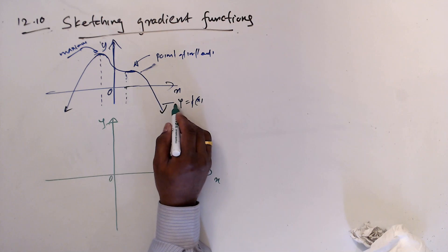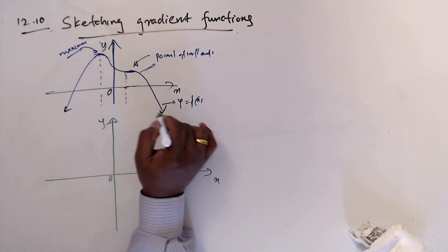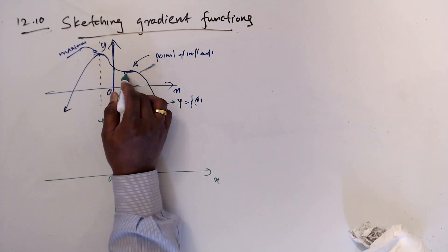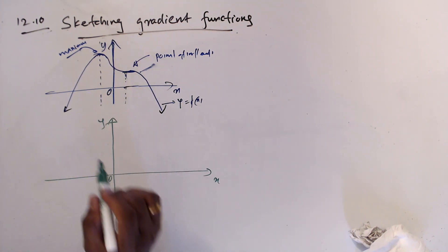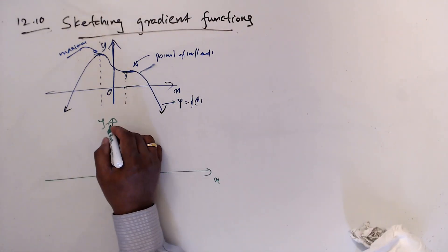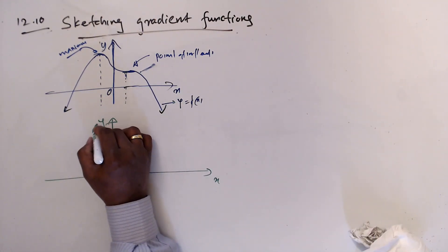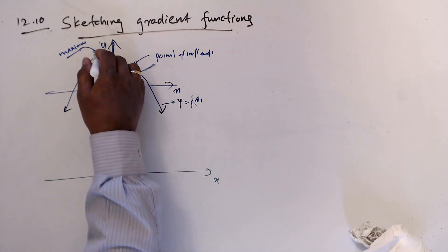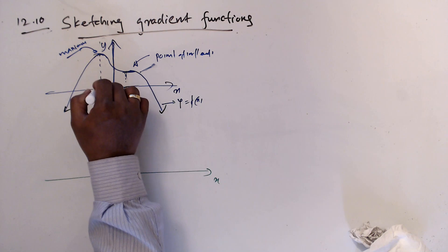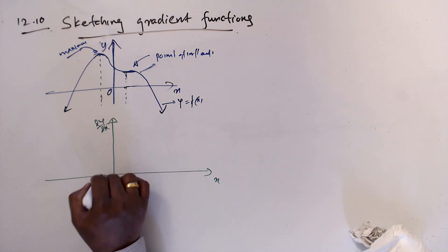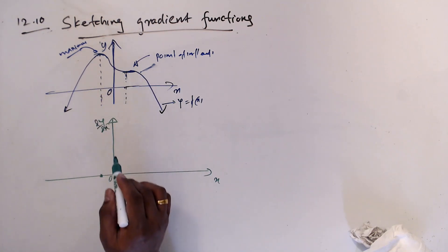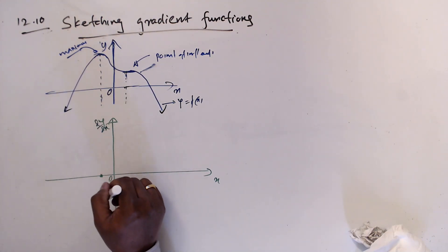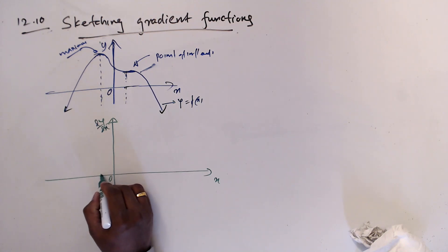Now we sketch the gradient graph for a new curve y = f(x) that has a maximum and a point of inflection. We plot x versus dy/dx. At the maximum point, the gradient dy/dx is zero — so we mark zero on the gradient graph at that x value.